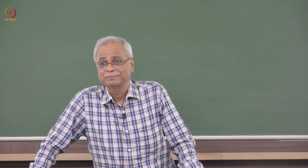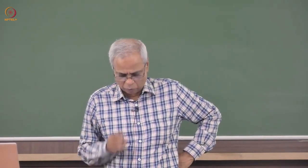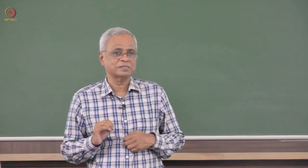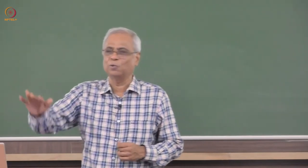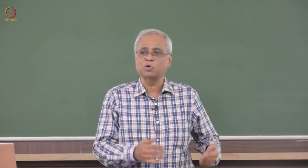Rolling resistance is not a function of velocity — it is a constant. Power, however, will be a function of velocity since power equals force times velocity. The rolling resistance coefficient depends on tire material, tire structure, tire temperature, tire inflation pressure — less air in the tire increases rolling resistance — tread geometry, road roughness, road material, and the presence of liquids on the road. All these things change the rolling resistance. We often assume a smooth tarred road, but many times you do not get that, in which case rolling resistance will increase.